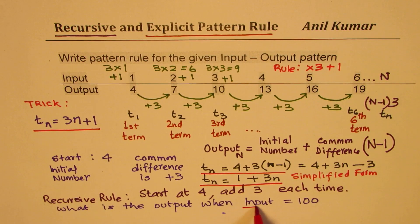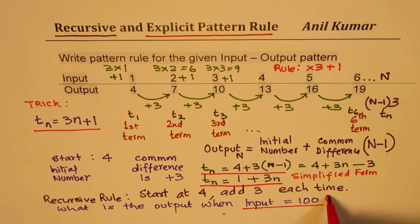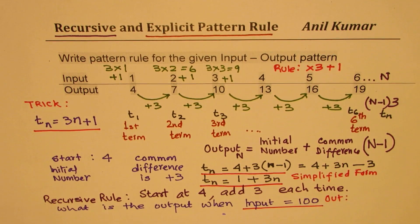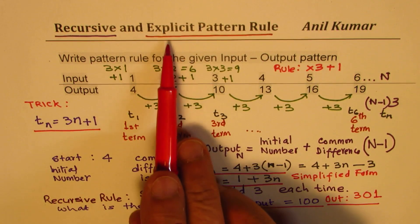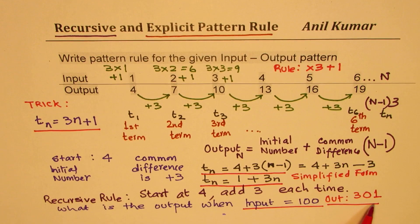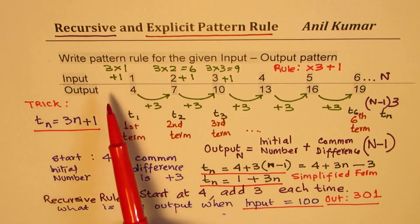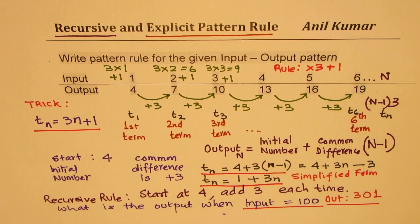Now, if the input is 100, what is the output? Can you tell me? Clearly, it is 301. Do you see that? So, that is a huge advantage of using explicit pattern rule. Straight away, we can find our answers without going through all of them in between. That is the advantage of explicit pattern rules and the power of algebra.